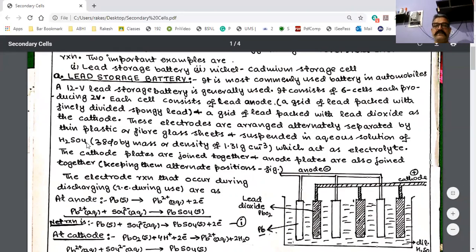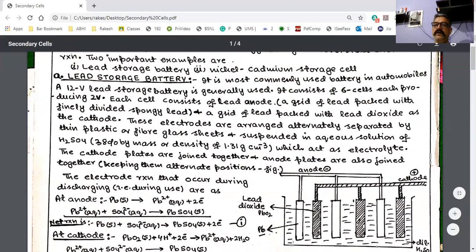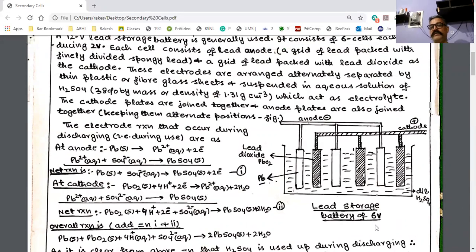The electrolyte is 38% by mass H2SO4 with density around 1.31 gram per centimeter cubed. When it is fully charged, this is the density. The construction shows that cathodes are joined together and anodes are joined together. This is very important. In the diagrammatic representation, I've shown a six volt lead storage battery with three cathodes and three anodes, meaning three cells. Each cell produces two volts, so total is six volts.